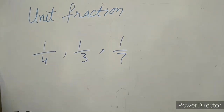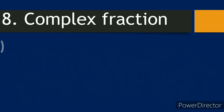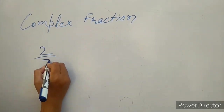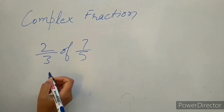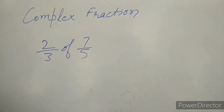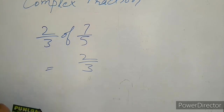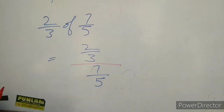Complex fraction: a fraction whose numerator and denominator are both fractions is known as a complex fraction. For example, two over three divided by seven over five — both are fractions, so we write them as two over three over seven over five. These are known as complex fractions.